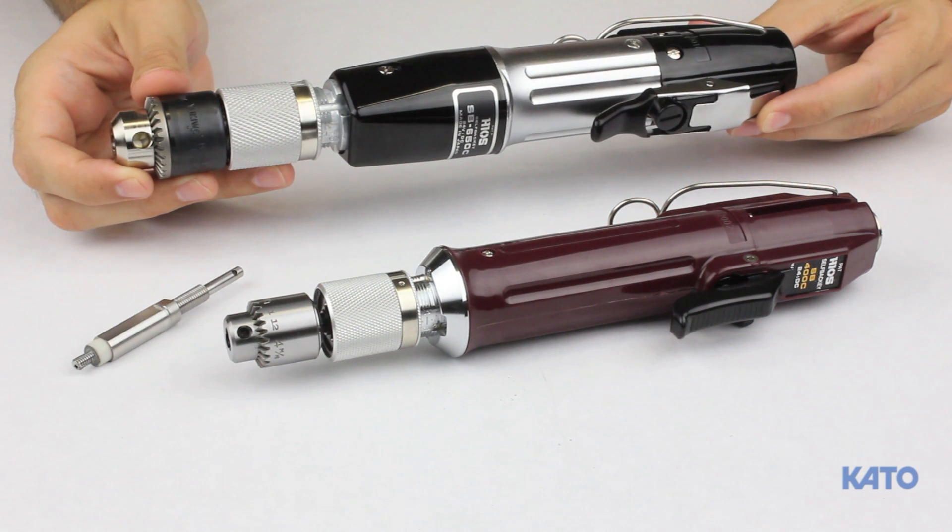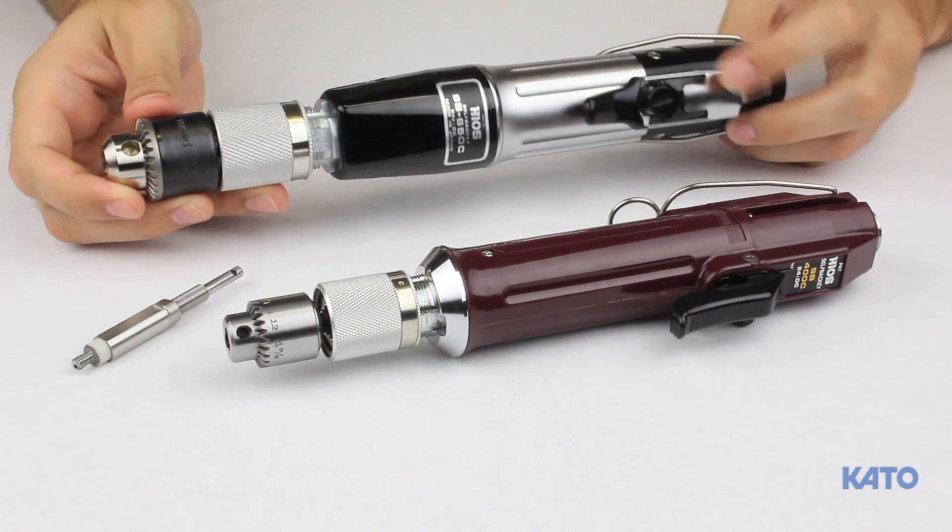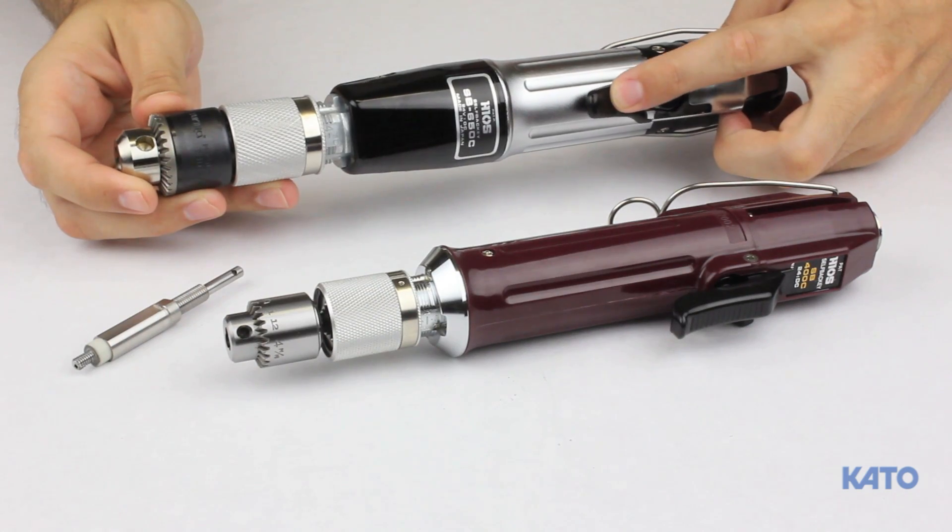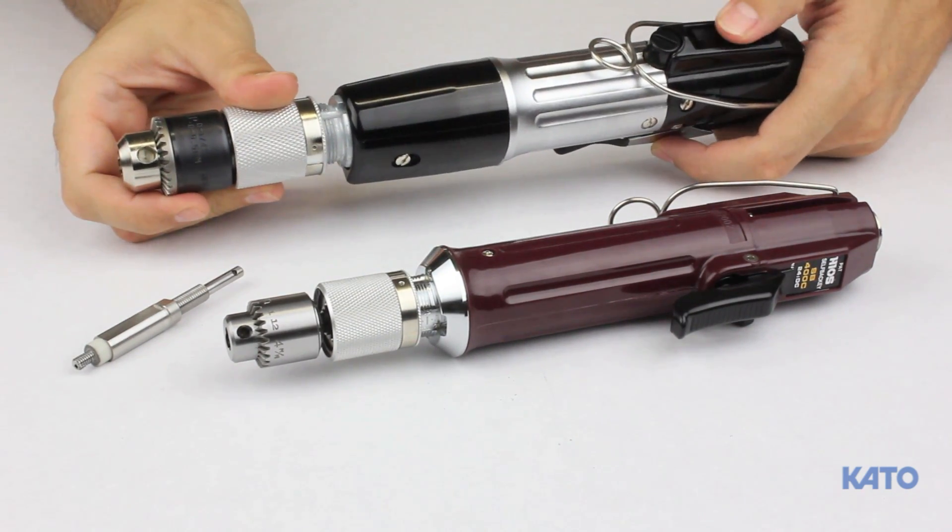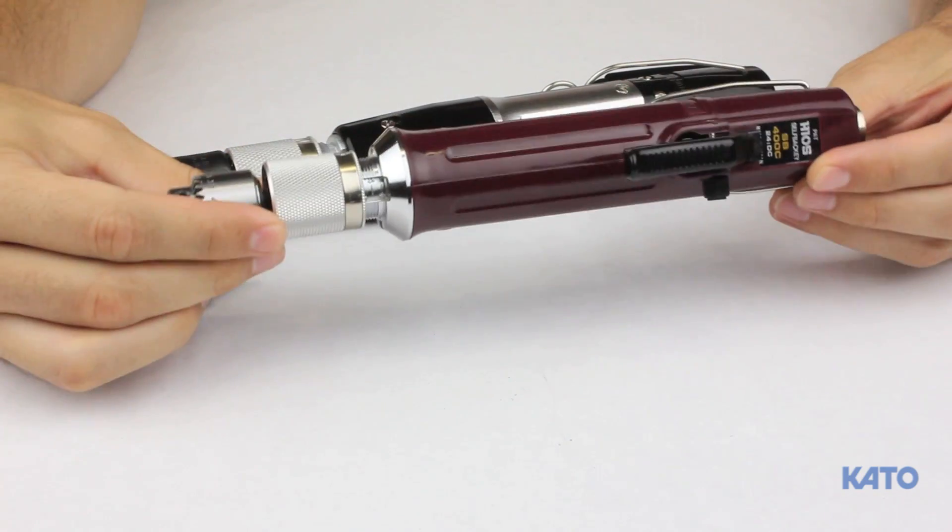It is used for installing sizes 8-32, M5 and larger. Although the SB650 is larger, the controls and functions are identical to the SB400C. For the remainder of this video, we'll use the SB400C.